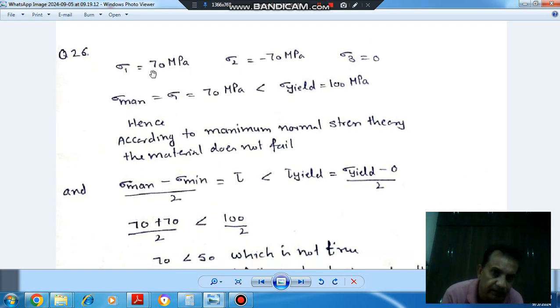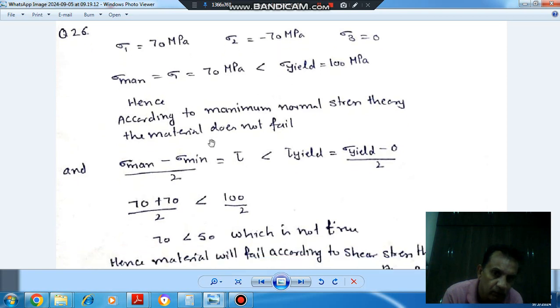And sigma max here is 70 MPa and sigma minimum is minus 70 MPa. So shear stress is sigma max minus sigma min by 2. So shear stress comes as 70 MPa. And yield shear stress is sigma yield minus 0 by 2, so that is 50 MPa.